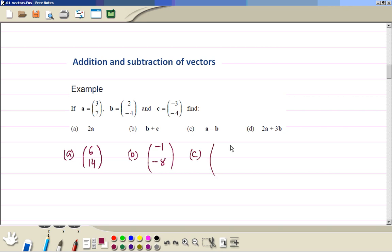a minus b, so 3 minus 2 is 1, and 7 minus minus 4 is 11. For part d, we have to multiply the vector a by 2 and b by 3, then add. So 6 plus 6 makes 12. 7 times 2 is 14, minus 4 times 3 is minus 12. Now add, so the answer is 2.